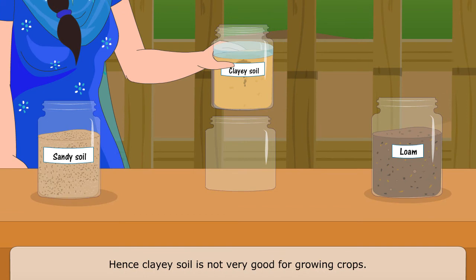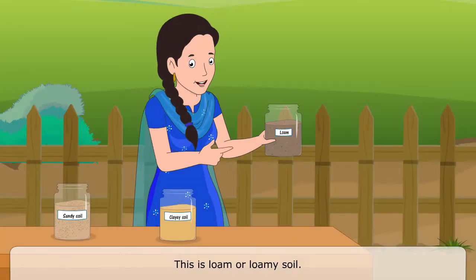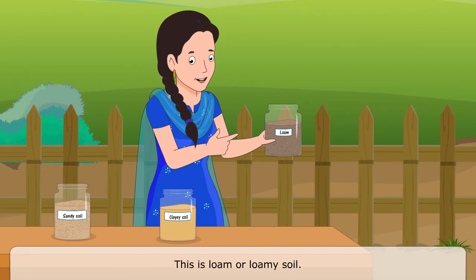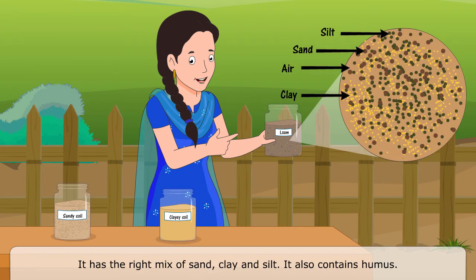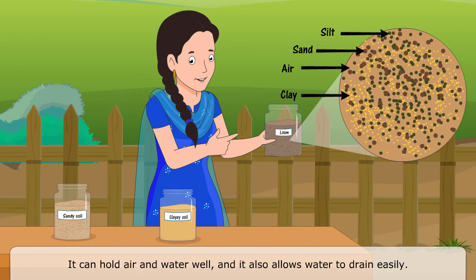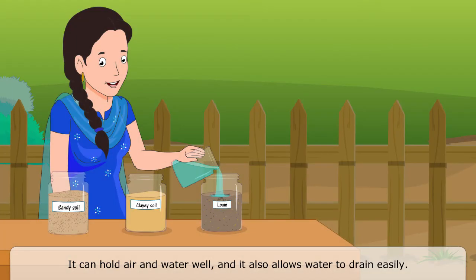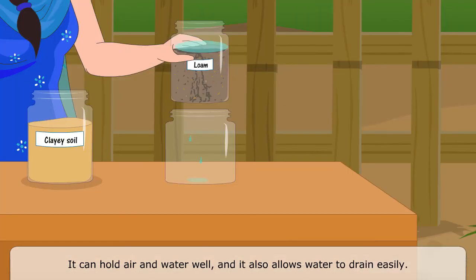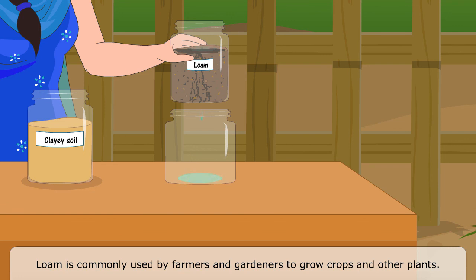Hence, clay soil is not very good for growing crops. This is loam or loamy soil. It has the right mix of sand, clay, and silt. It also contains humus. It can hold air and water well, and it also allows water to drain easily. Loam is commonly used by farmers and gardeners to grow crops and other plants.